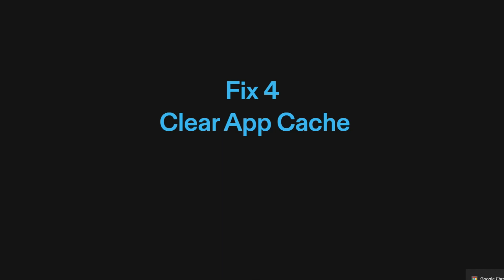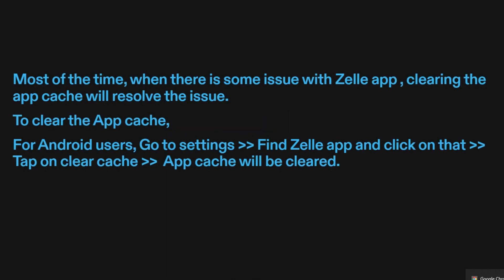Fix four: clear app cache. Most of the time, when there is some issue with the Zelle app, clearing the app cache will resolve the issue. To clear the app cache for Android users: go to Settings, find the Zelle app and click on it, then tap on Clear Cache. The app cache will be cleared.